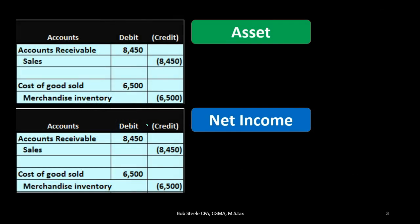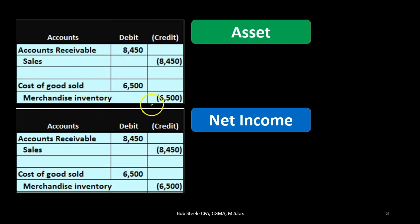Looking at those two transactions together as journal entries: accounts receivable is going to go up by $8,450 with a debit, and sales is going to go up with a credit of $8,450 — that's the sales component. Then we have the cost of goods sold component: merchandise inventory going down with a credit of $6,500, and the related expense, cost of goods sold, increasing.